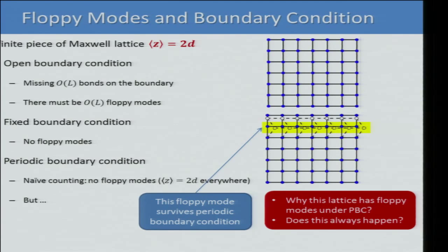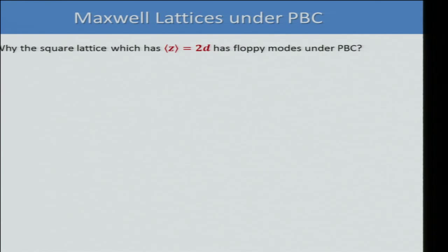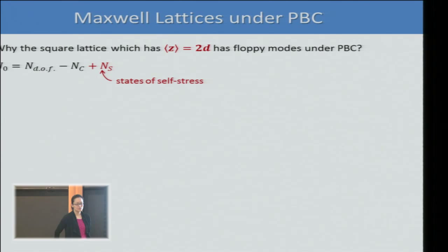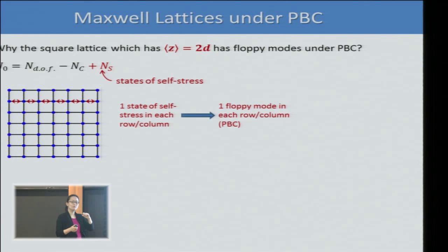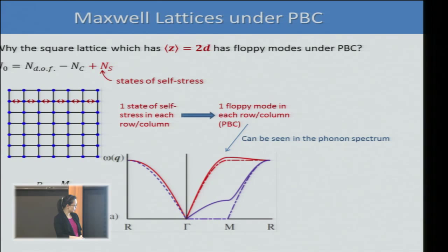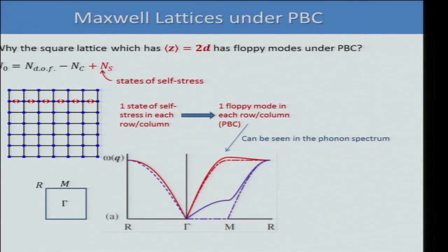Why does this happen? The square lattice under periodic boundary conditions has states of self-stress — each row and column can bear compression with zero net force on each node. That gives one floppy mode per row and column. In the phonon dispersion relation you see a zero-frequency line in the first Brillouin zone. Adding next-nearest-neighbor bonds stabilizes the lattice and lifts these floppy modes.